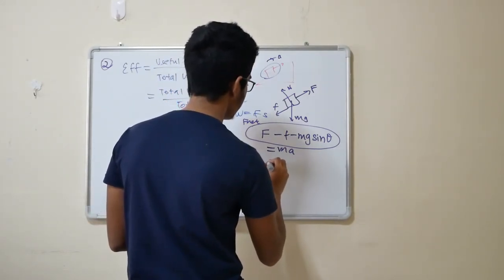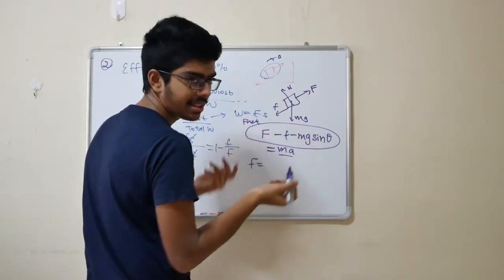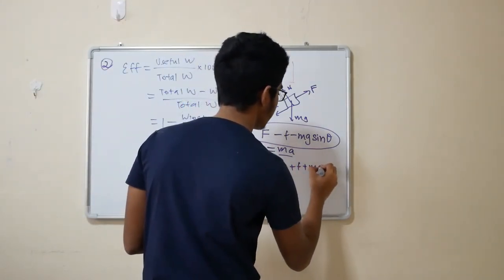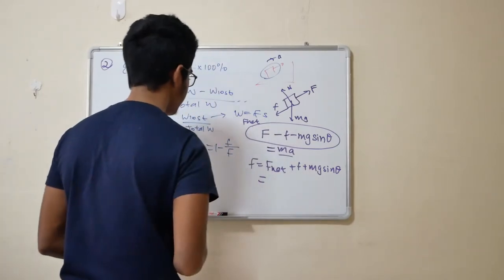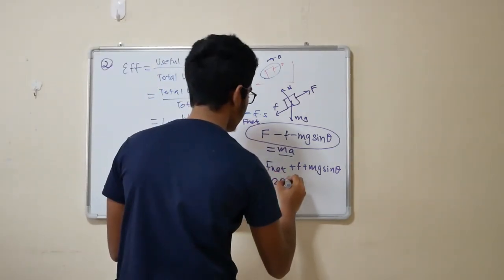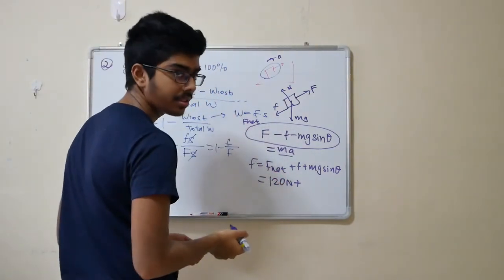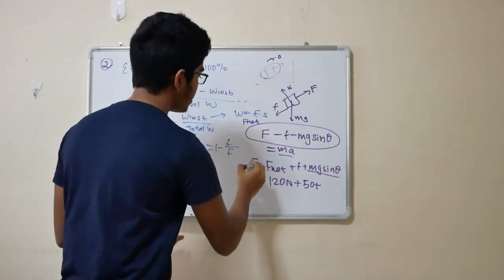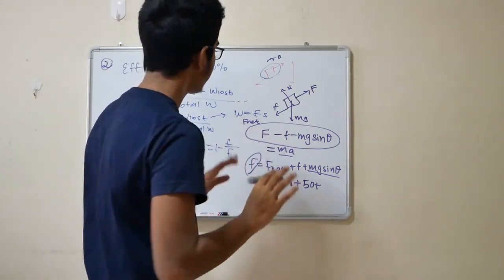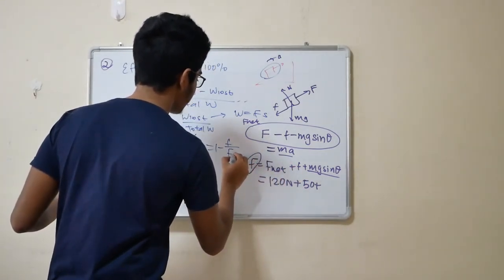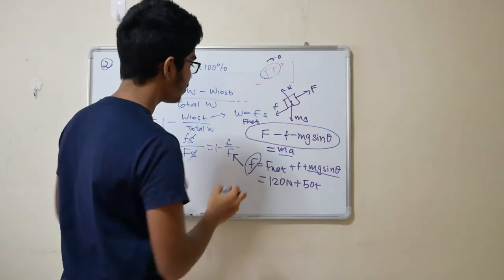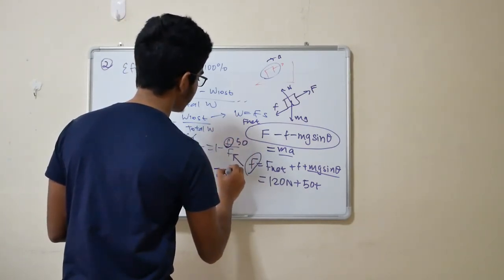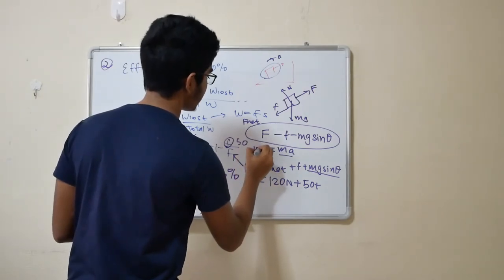So how do you get F? F equals M A. What is this M A? M A is just equals to F net. So it's F net plus friction plus Mg sine theta. F net in this case is 120 newtons plus frictional force, 50 newtons, plus Mg sine theta. You just fill in Mg sine theta. You get the F. Now you get the F. You just substitute this in. You have a frictional force, which is 50 newtons, and you'll get the same answer, which is 76%, once it times 100%.